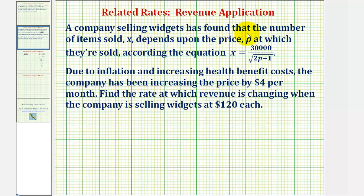A company selling widgets has found that the number of items sold, x, depends upon the price p at which they're sold according to the equation x equals 30,000 divided by the square root of the quantity 2p plus 1.